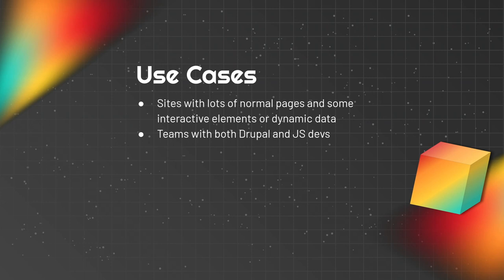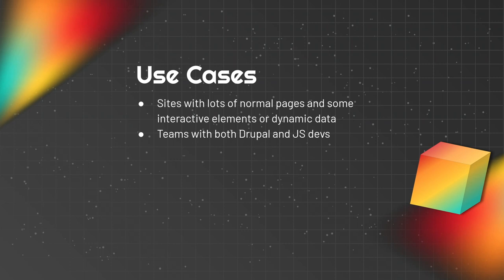Use cases for progressively decoupled: big sites with a lot of content where certain parts are interactive, dynamic, or have a complexity that's hard to do server-side. Search is a great example — especially with lots of facets or filters, there are a lot of interactions and Drupal search is challenging right now. Interactive charts, maps, and animations are also good examples. On the e-commerce side, shopping carts and pricing widgets work well, and even with Drupal Commerce the recommended approach is to progressively decouple the cart, add-to-cart form, and mini cart in the header — and there's a module for that.